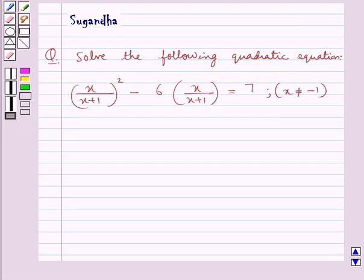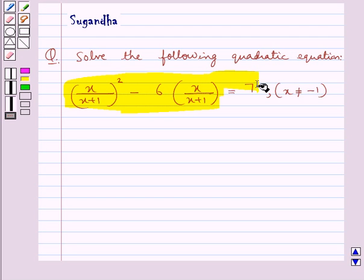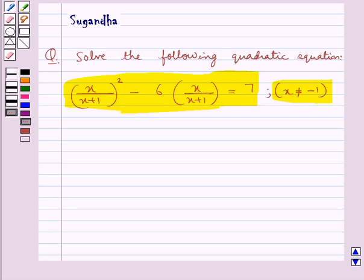Hello and welcome to the session. In this session we discuss the following question: solve the quadratic equation x upon (x+1) whole square minus 6 into x upon (x+1) is equal to 7, such that x is not equal to minus 1. So we need to find the value of x for the given quadratic equation. Let's proceed with its solution.